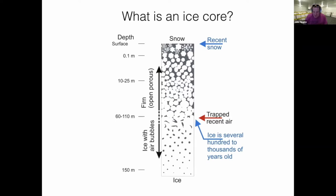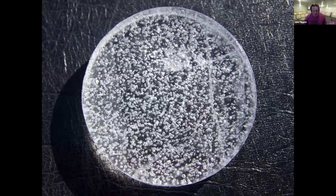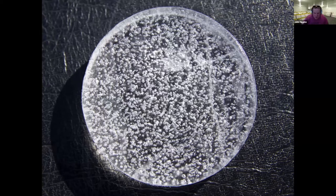There is a detail that the air is slightly younger than the ice in which it's trapped, because the air can still communicate through pores while being buried — but that's a detail scientists worry about and not very relevant here. What an ice core actually looks like: these are little bubbles of ancient air trapped inside the ice. When we take this into the lab and analyze it, we are extracting the air from these bubbles and introducing it into mass spectrometers and other chemical analyzers.